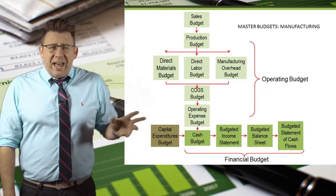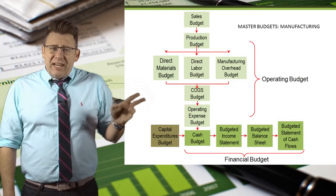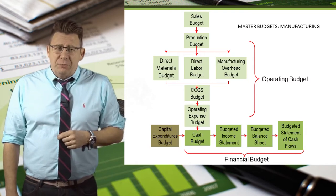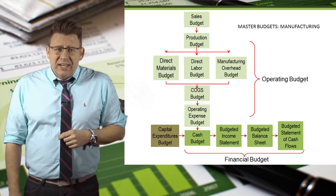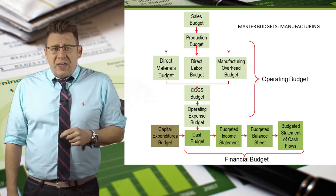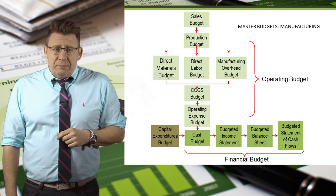The cash budget is the ninth budget completed in the master budget process, and it is a financial budget rather than an operating budget.